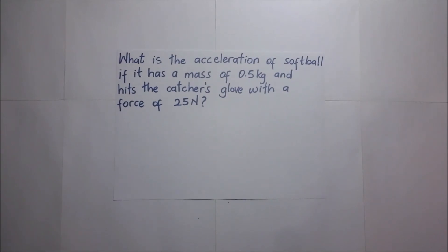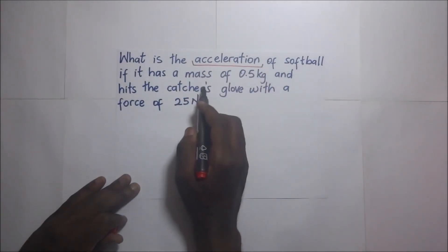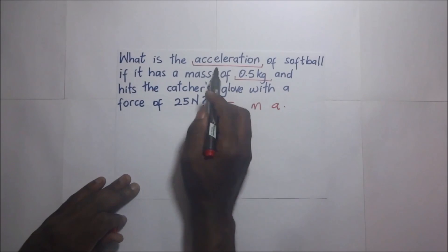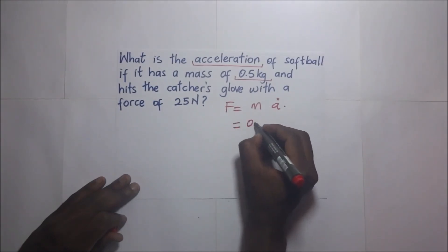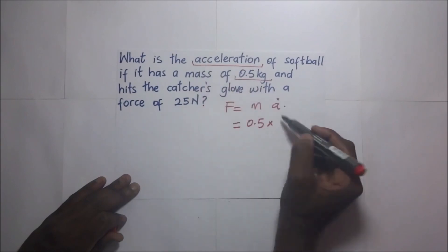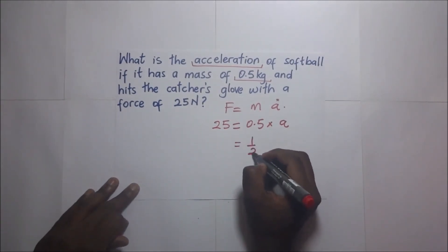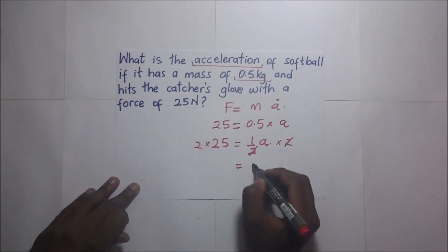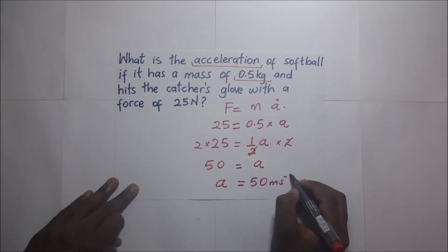Example 6: What is the acceleration of a softball if it has a mass of 0.5 kilograms and hits the catcher's glove with a force of 25 Newtons? Using F = ma: 25 = 0.5 × a, which is the same as a half times a equals 25. Multiplying both sides by 2, our acceleration is 50 meters per second squared.